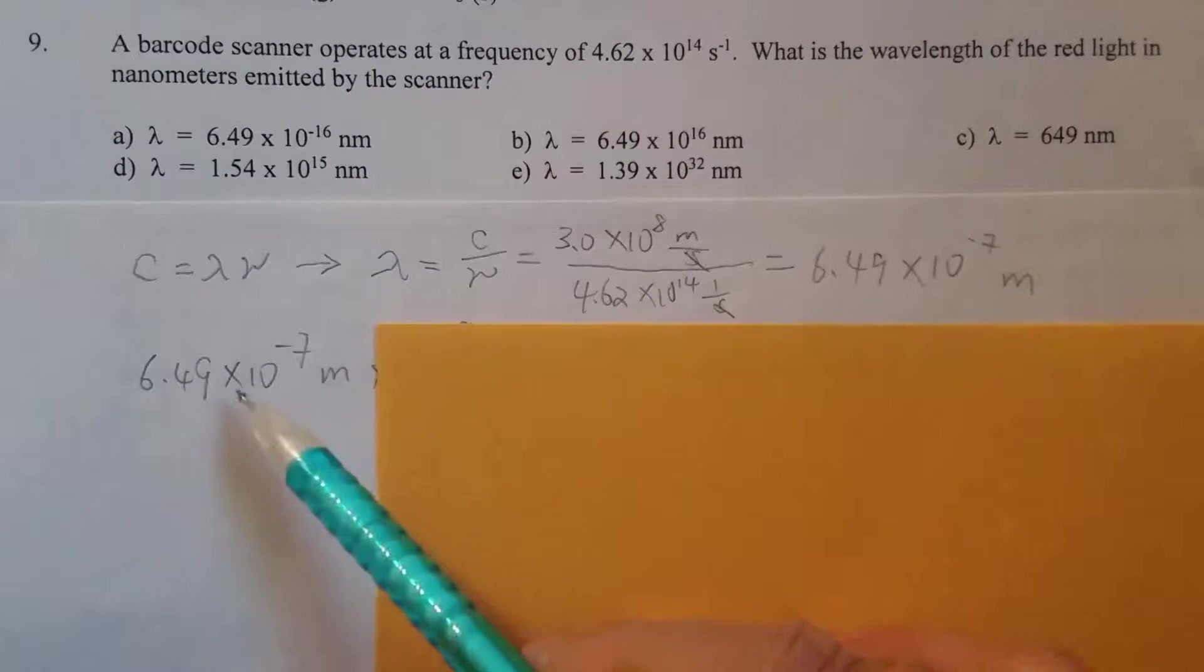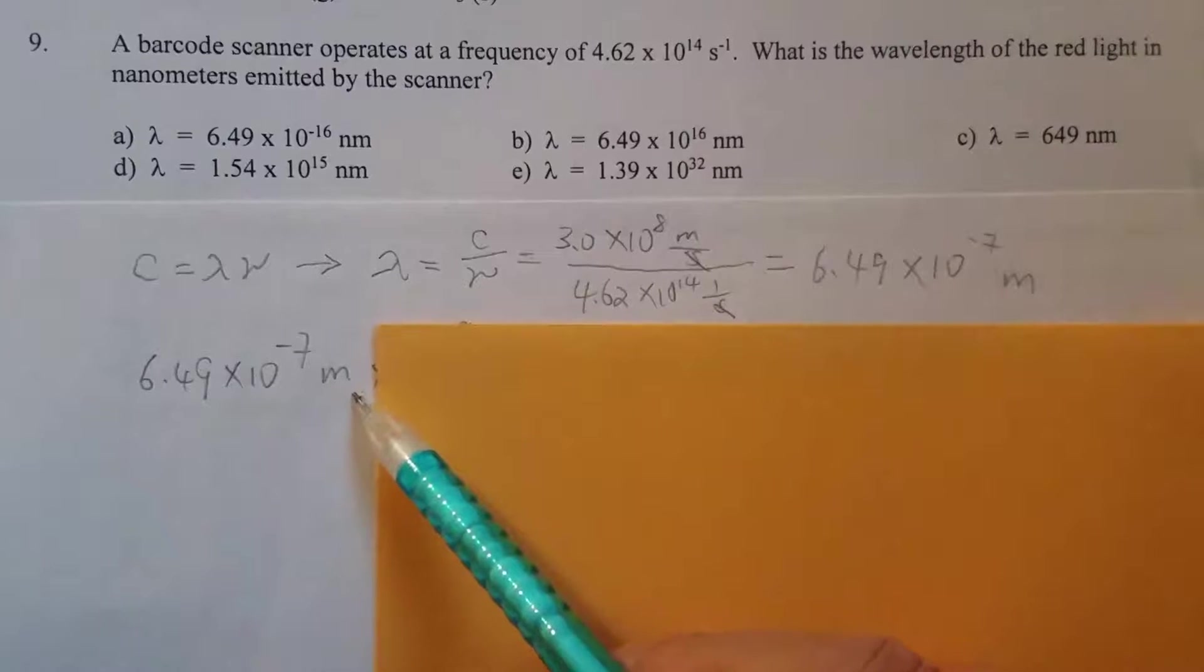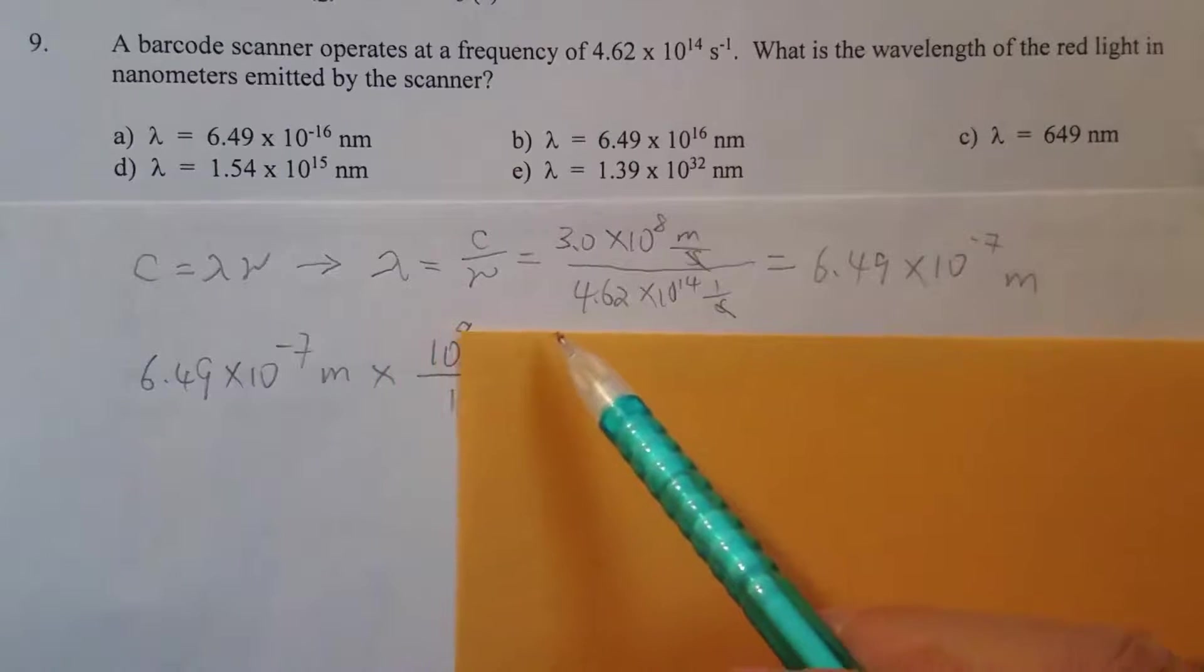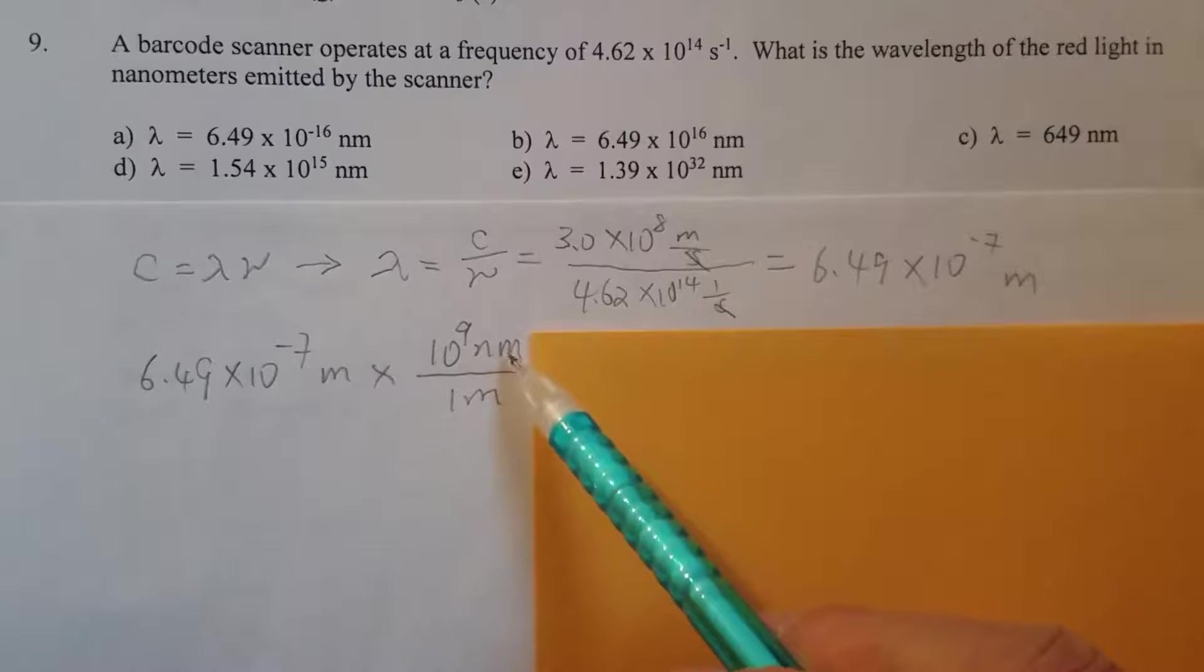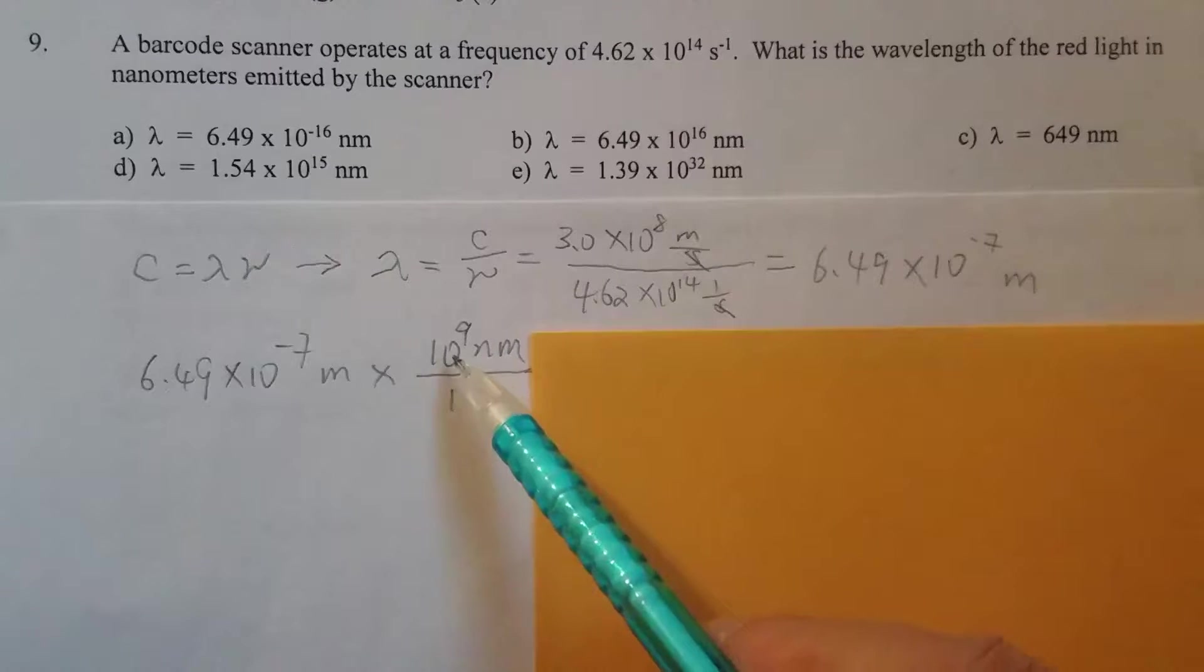Now we convert meters to nanometers, converting from meters, put that on bottom, converting to on top, so nanometers on top. And then of course you have to give the relationship, so one meter equals one billion nanometers, okay?